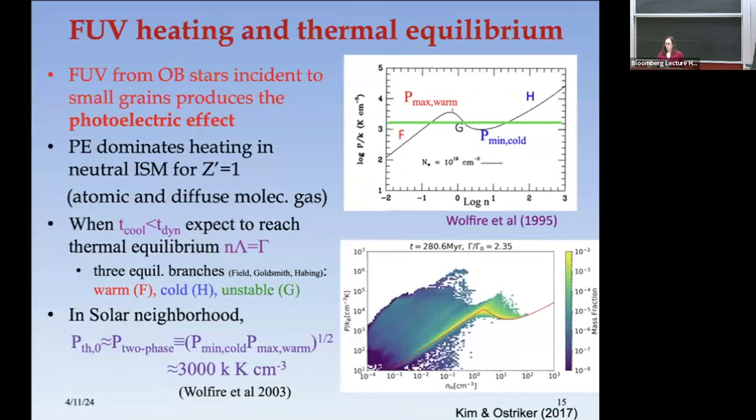The far UV is very important for heating in the ISM through the photoelectric effect — it's the main heating mechanism in our galaxy at solar metallicity, in both atomic and diffuse molecular gas. What's shown here is the classical density-pressure thermal equilibrium diagram: the warm Field branch, the thermally unstable Goldsmith branch, and the cold Hollenbach branch.